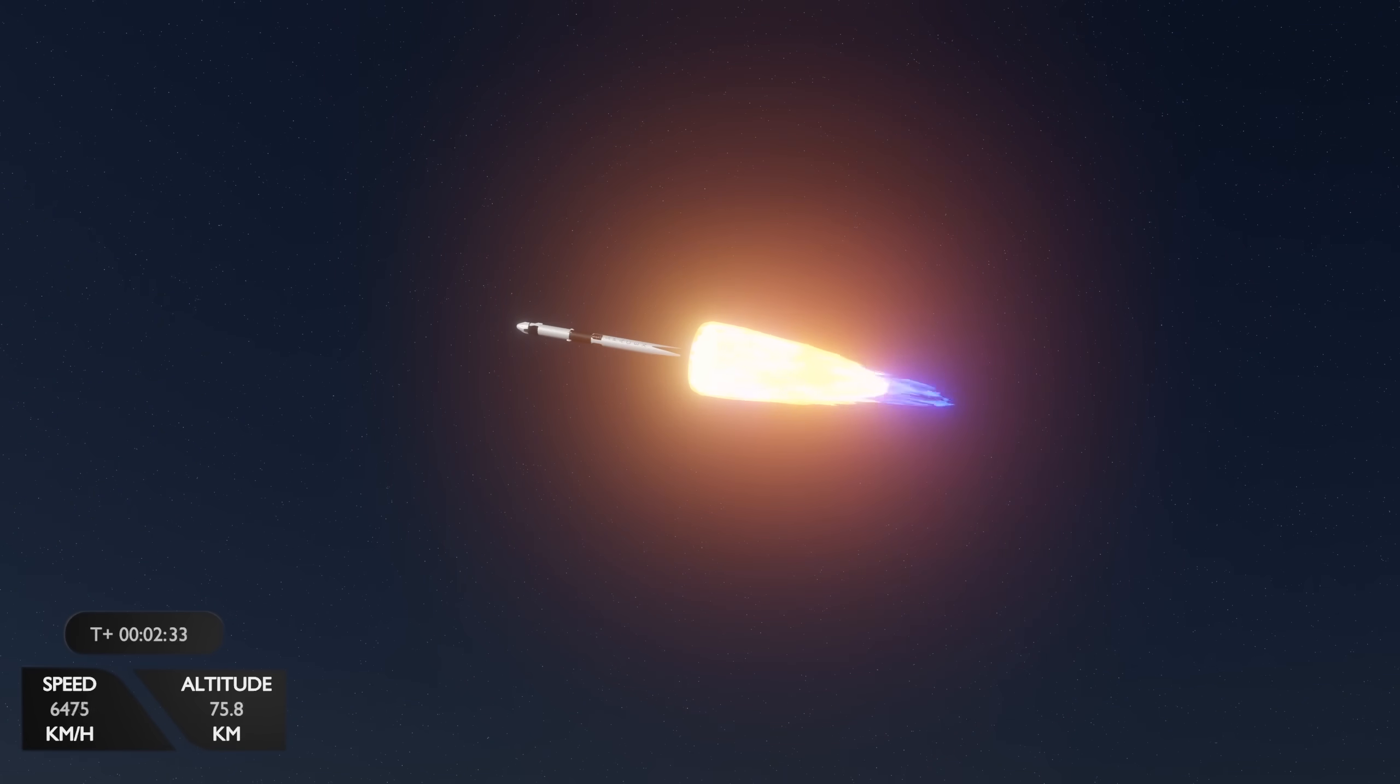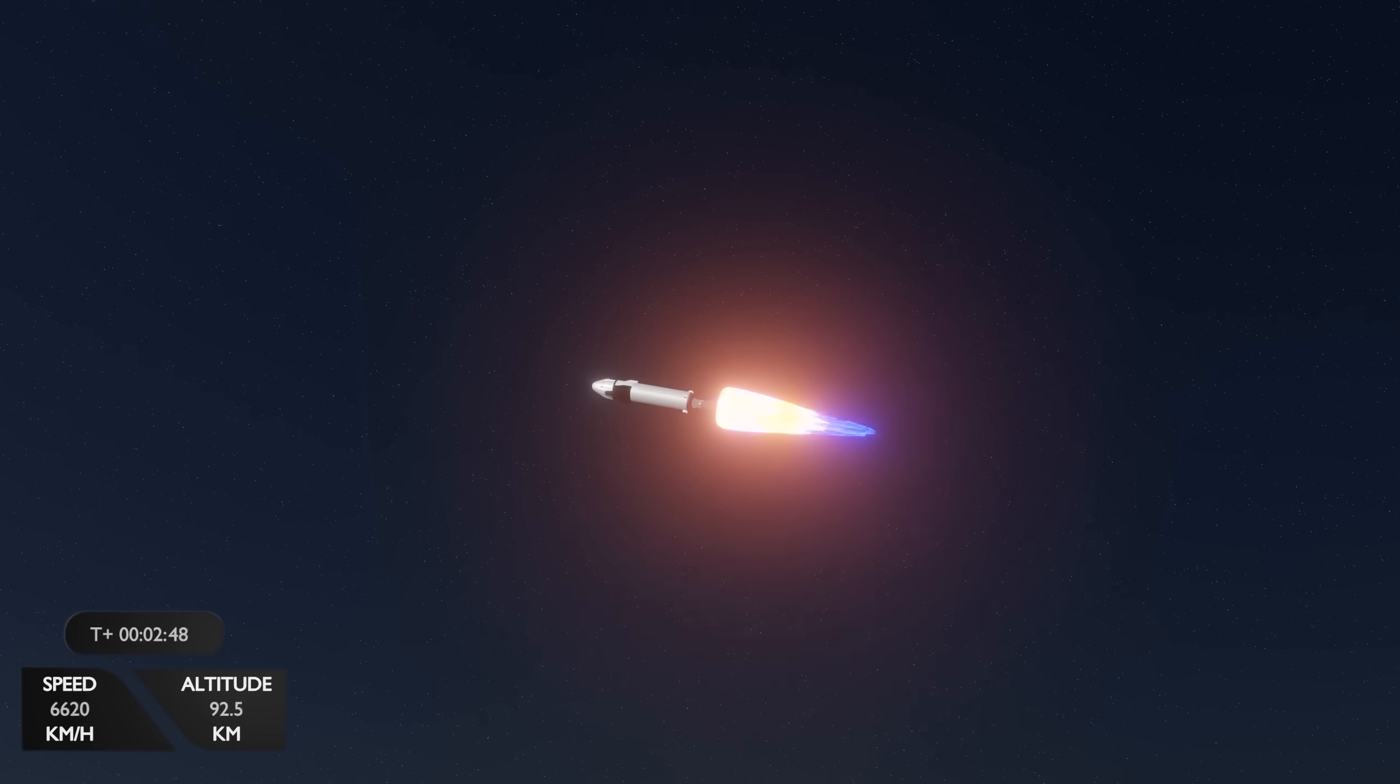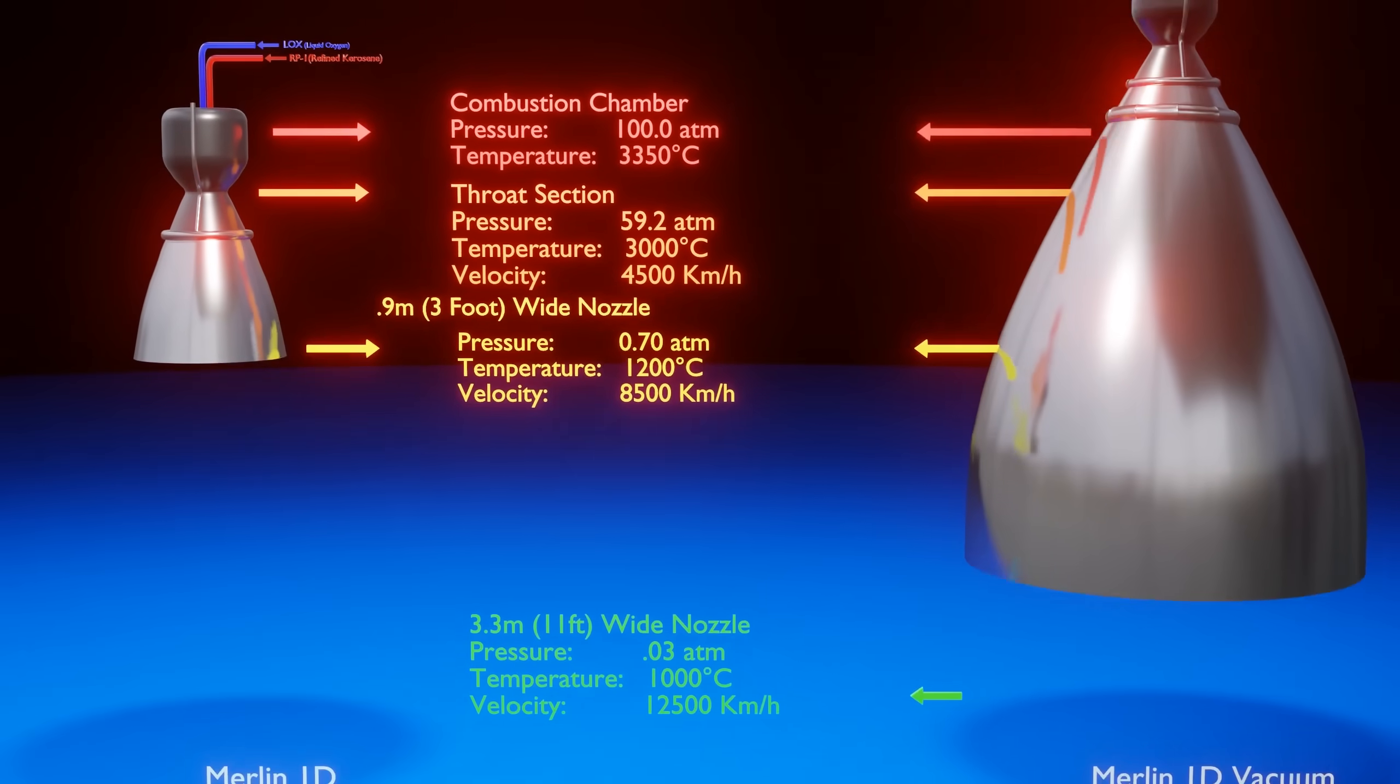This is where the second stage becomes functional. At just over two and a half minutes of flight, the first stage cuts off its engines. This is referred to as MECO, Main Engine Cut-off. The first and second stage separate. And the second stage starts its Merlin vacuum engine and begins to accelerate the payload once again. How does the vacuum engine differ from the first stage engine? Well, the vacuum engine is very similar to the first stage engine, except for one critical component. This is of course the nozzle size.